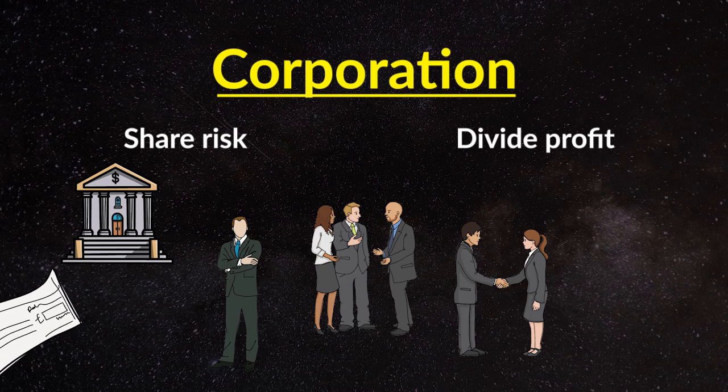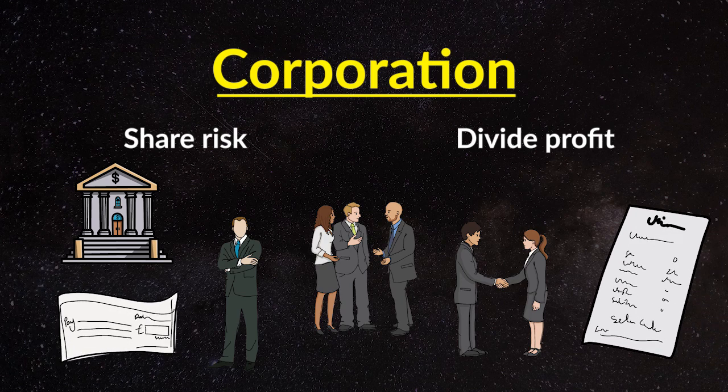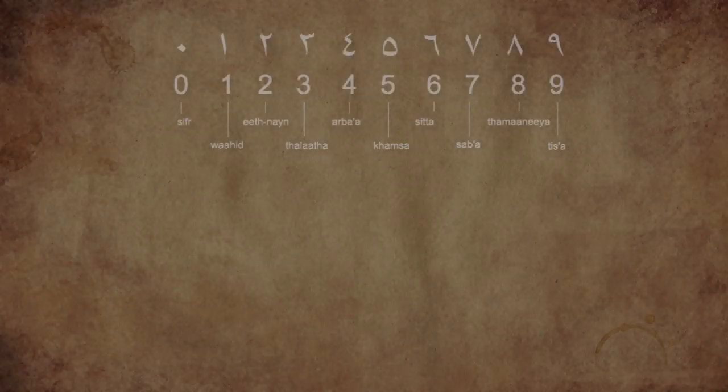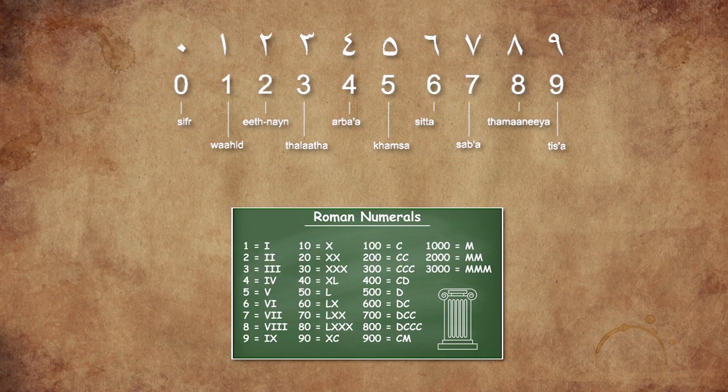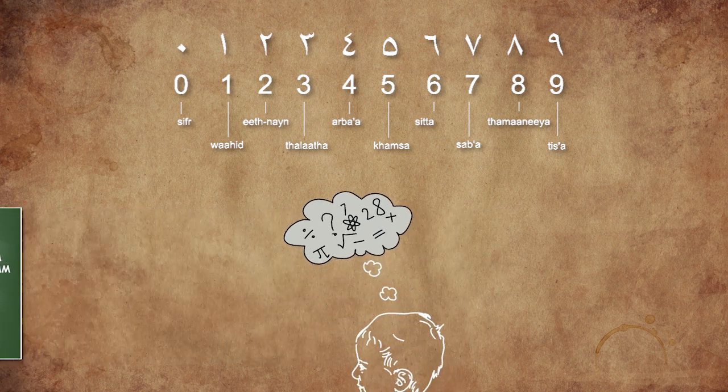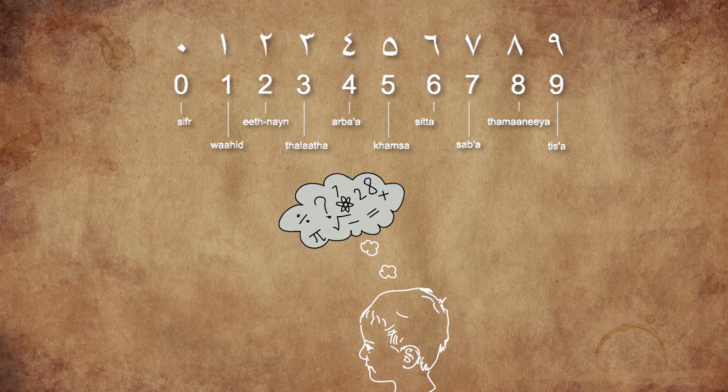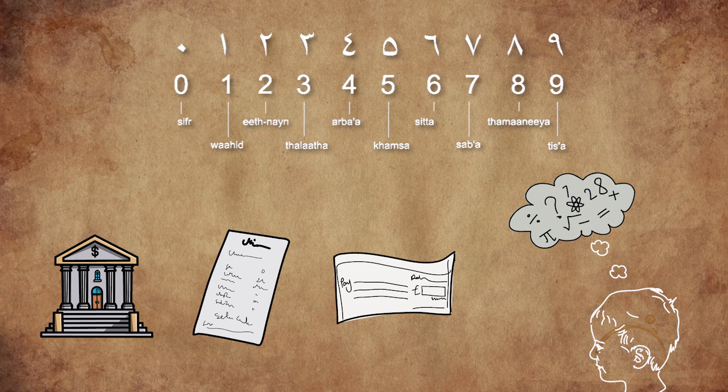Corporations need things like banks and insurance. Contracts enforced by the state become very important. Around the 14th century, Arabic numbers began to replace the cumbersome Roman numerals. With Arabic numerals, there is suddenly a huge increase in our computational powers. To manage all this new, abstract finance, the importance of math comes to the forefront.